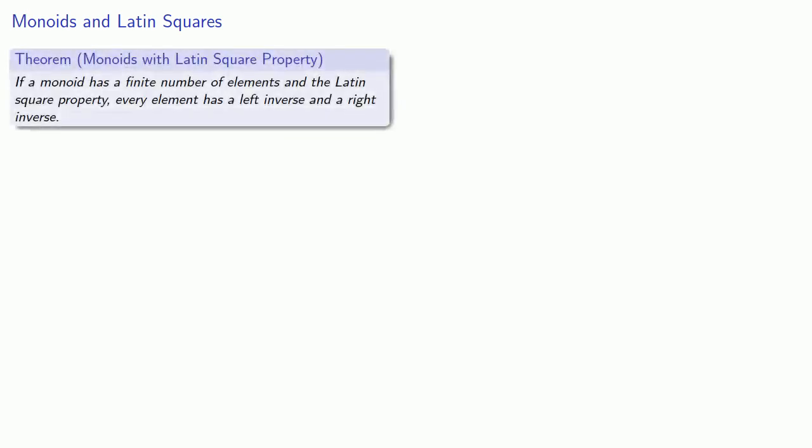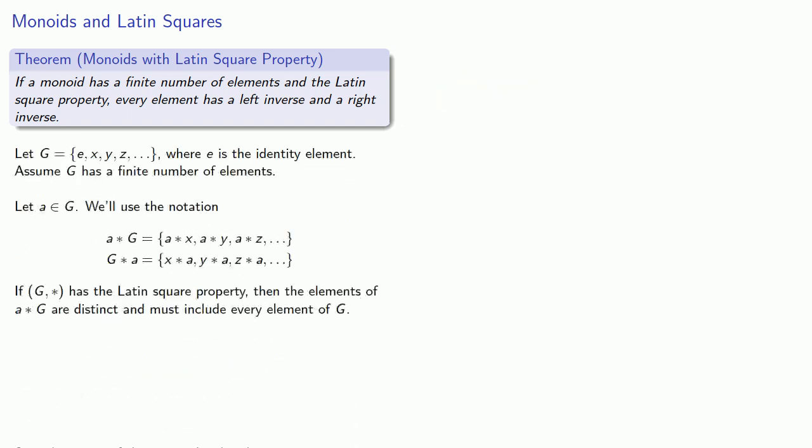And let's tie this back in with what we did earlier, where we found that if a monoid has a finite number of elements and the Latin square property, then every element has both a left-inverse and a right-inverse. Remember, we proved that because when we multiplied everything on the left by A, something had to be the inverse. And likewise, if we multiplied everything on the right by A, something had to give us the identity.